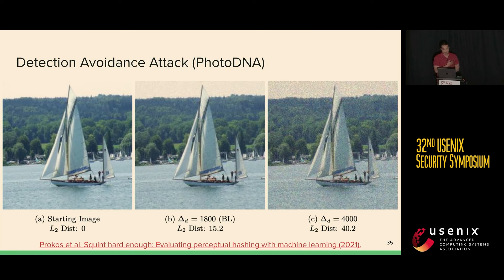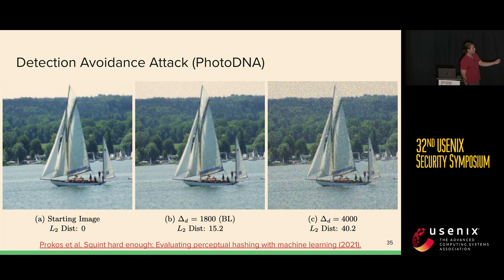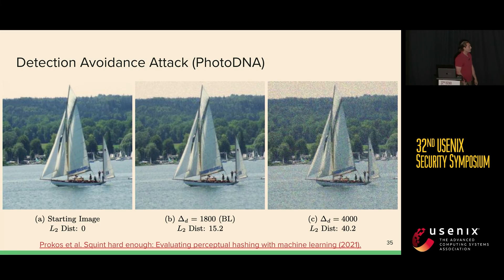On to the second attack: the detection avoidance attack, where we can generate two images which look semantically the same but hash to completely different values. On the left we have our starting image, then in the middle we apply perturbations to get to the baseline — you can see there's a ton of visual clarity remaining. And even if we go far beyond that hash baseline threshold up to 4000, where our baseline is 1800, there's still tons of image clarity remaining. Now these two images on the left and right hash to absolutely completely different things.